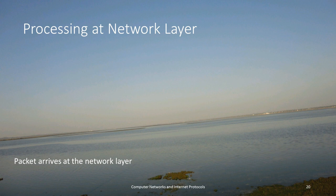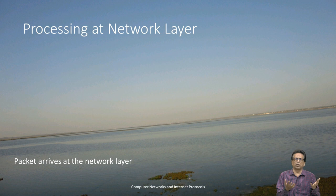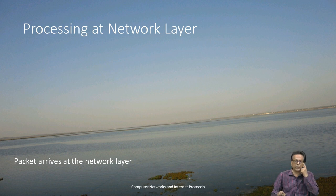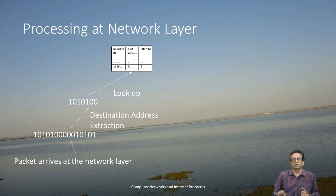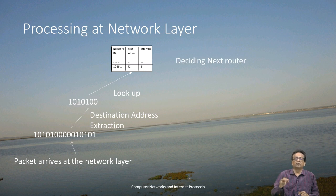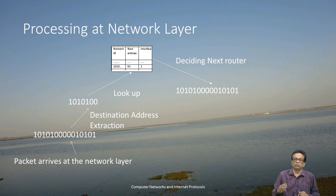When a packet arrives at the network layer — and we are stressing a little more on network layer because it is a very critical component — the receiver's network layer processes data separately than the intermediary routers. From that packet, there is something called a destination address. It has to find out where it is to be sent, so that is extracted. What we do next is something called a lookup. In that lookup process, we look at something called a routing table. The routing table will tell exactly which is the next router to pick up, and it picks up the packet and sends it to the data link layer.